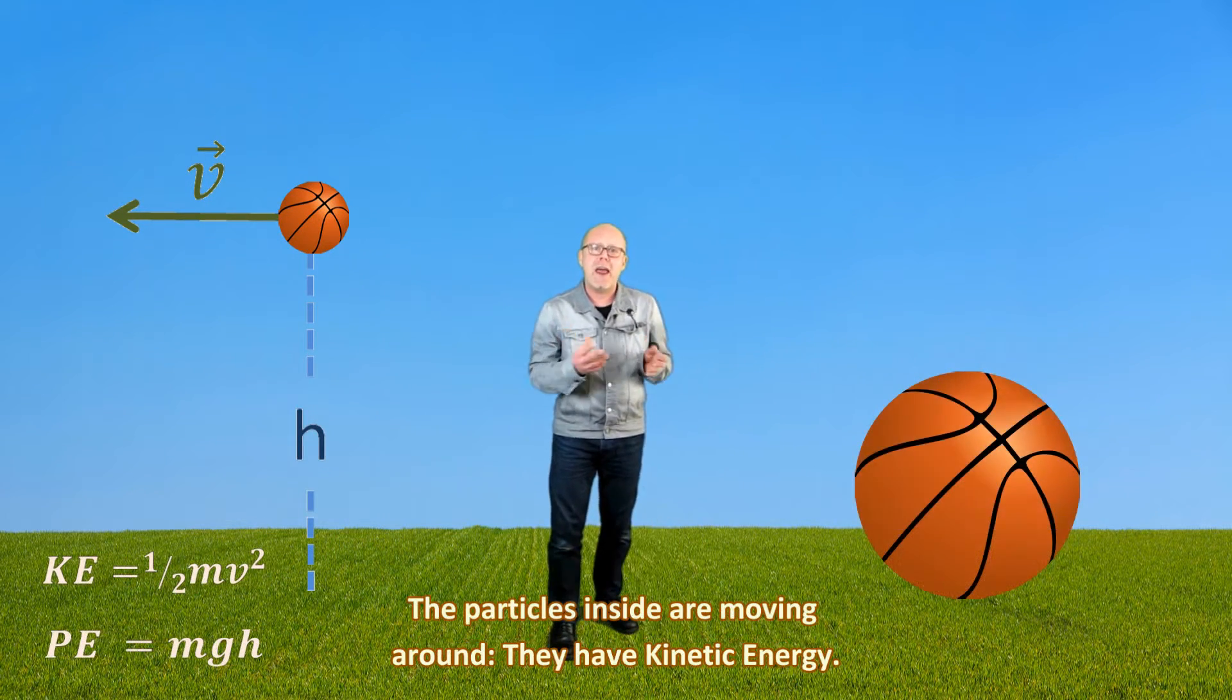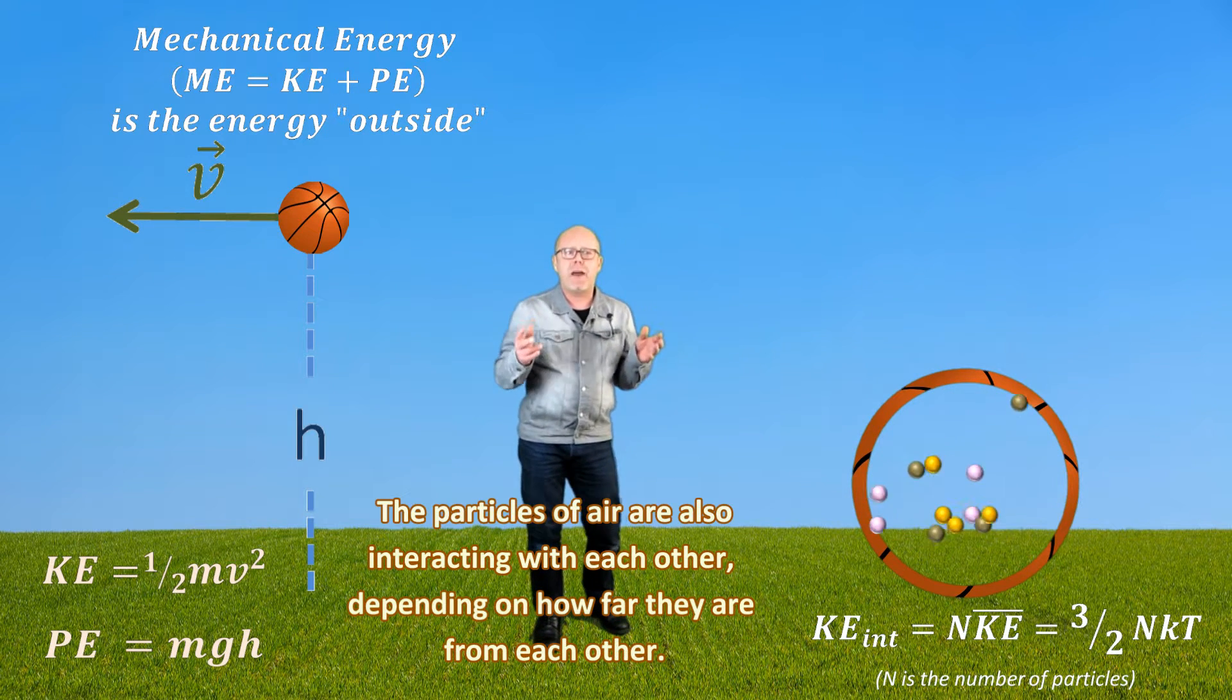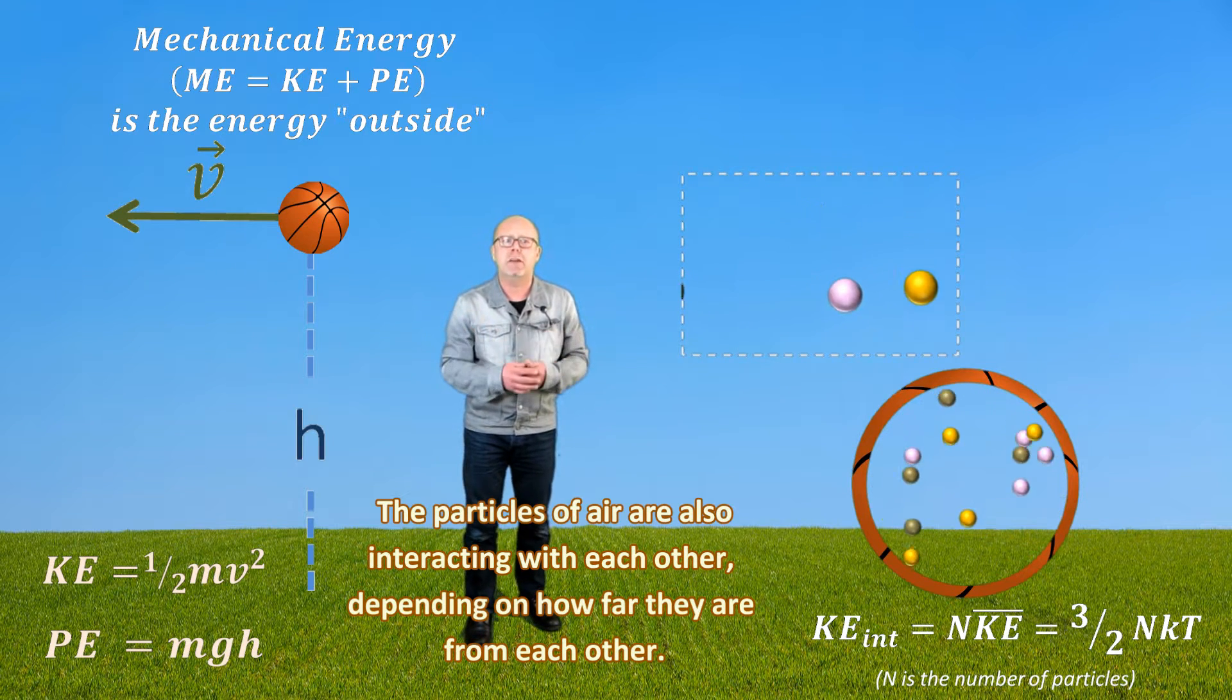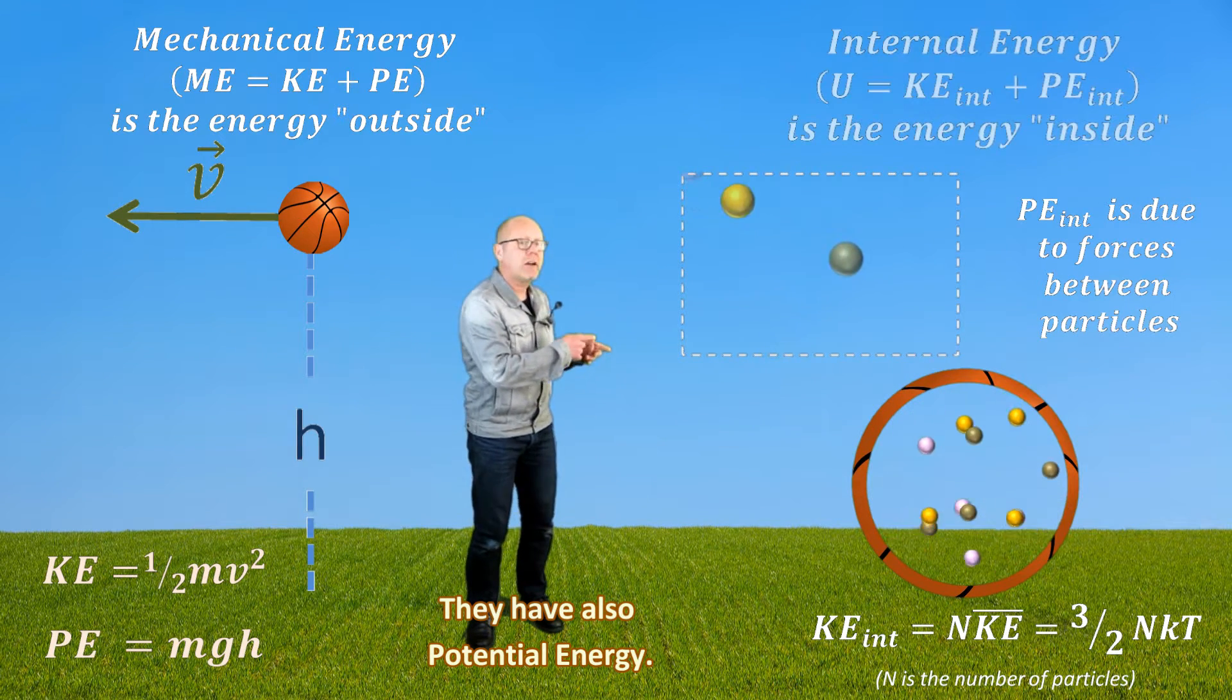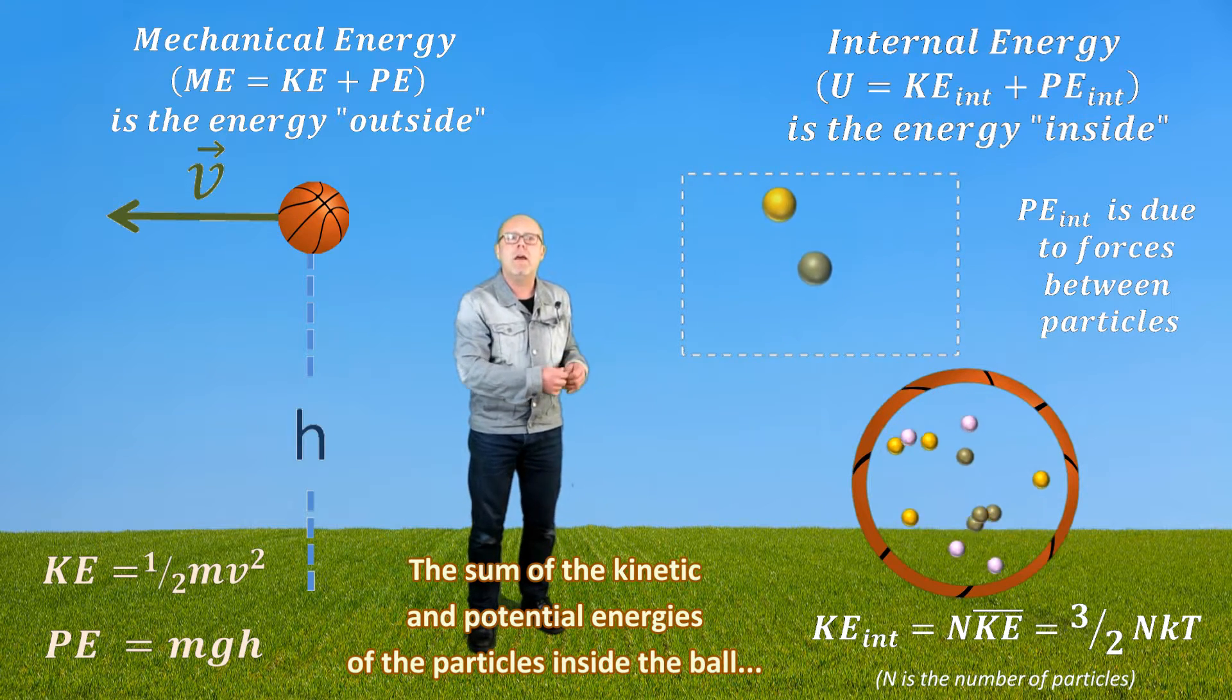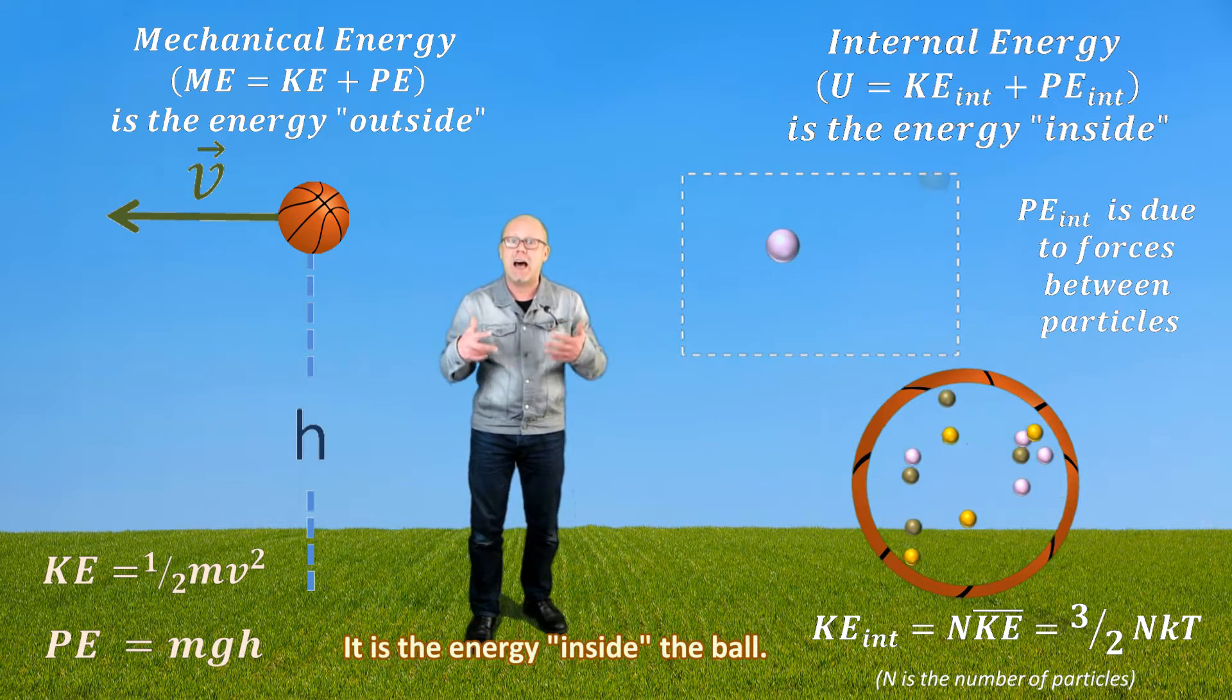The particles of air inside are moving around. They have kinetic energy. The particles of air are also interacting with each other, depending on how far they are from each other. They have also potential energy. The sum of the kinetic and potential energies of the particles inside the ball corresponds to the internal energy of the ball. It is the energy inside the ball.